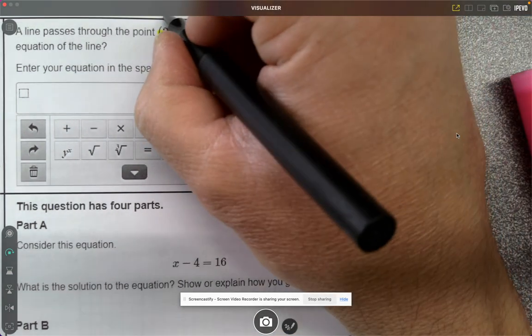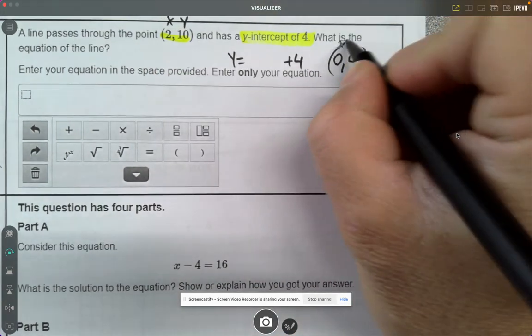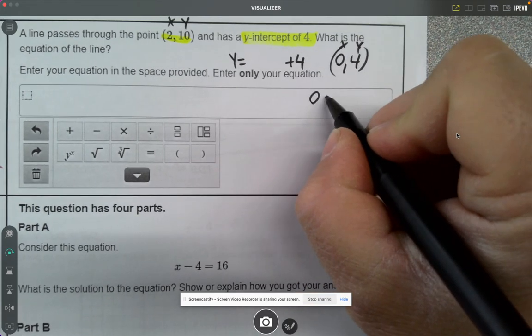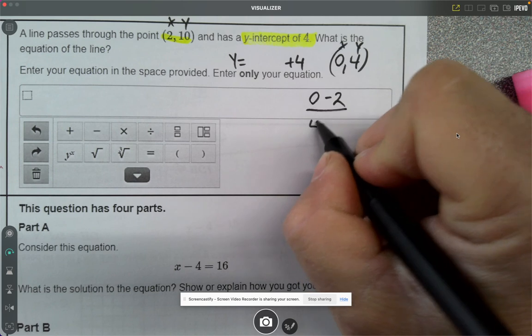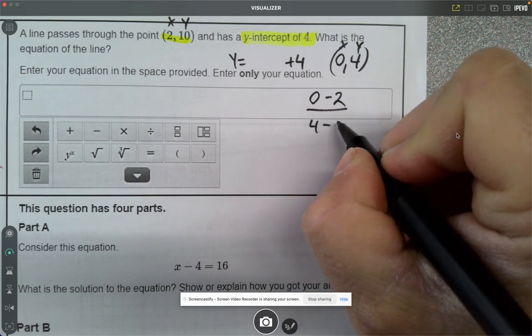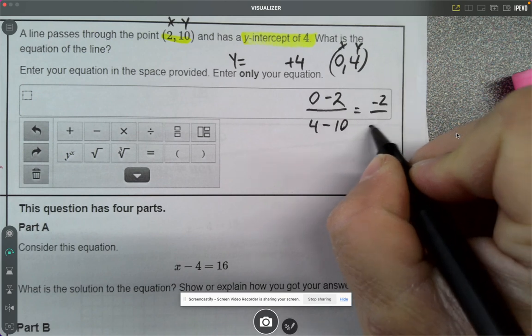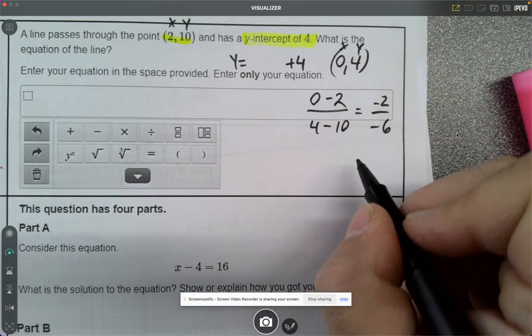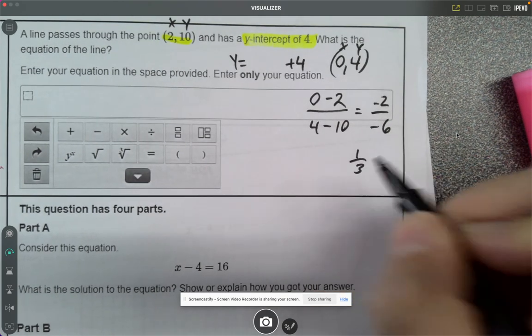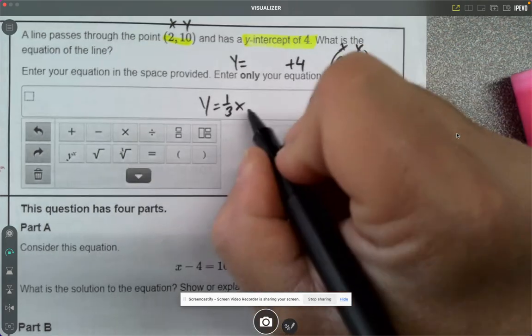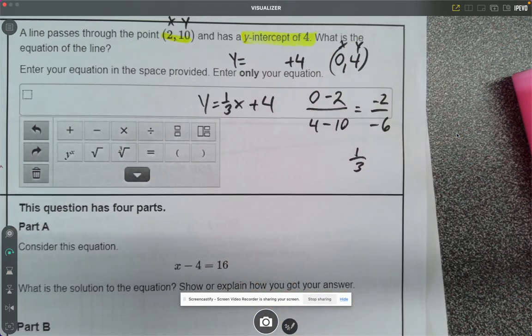This is my x, y, x, y. So now I just do the slope formula. I'm going to go 0 minus 2, 4, and subtract my y's down here, 4 minus 10. I get negative 2 over negative 6, and that is positive 1 third. So my equation is 1 third x plus my 4. Too easy, right?